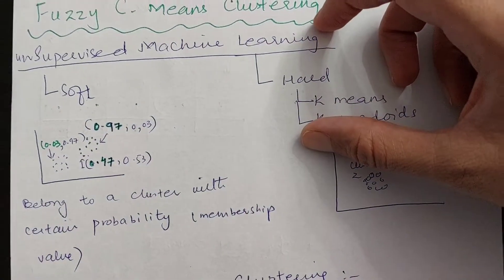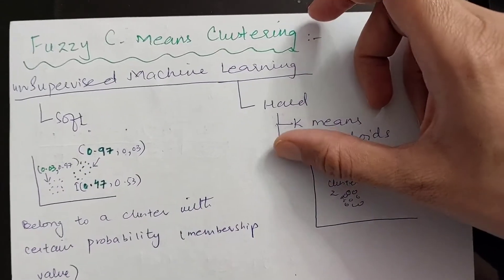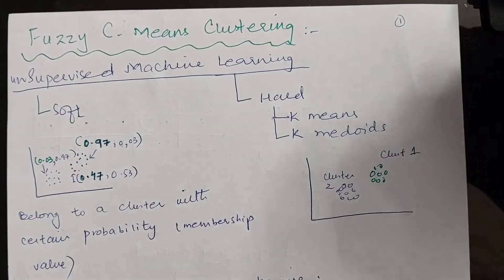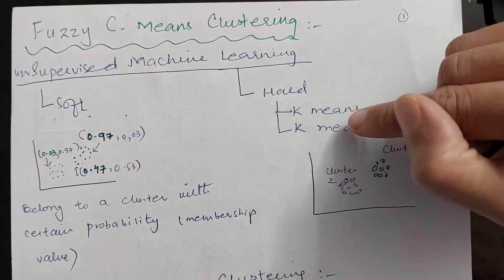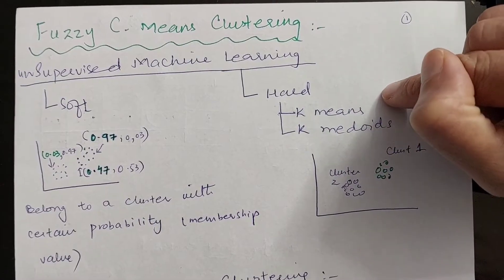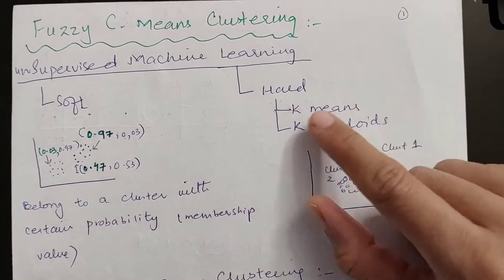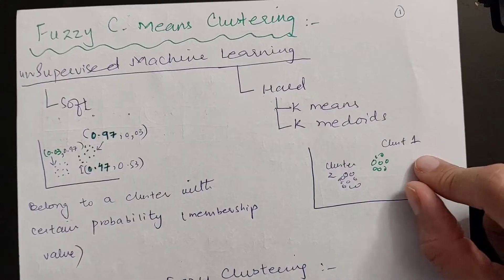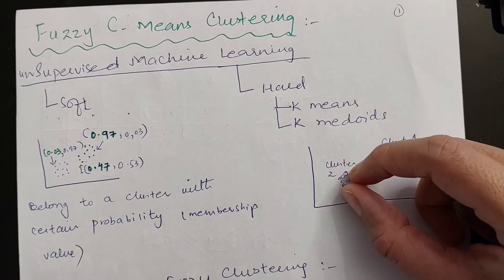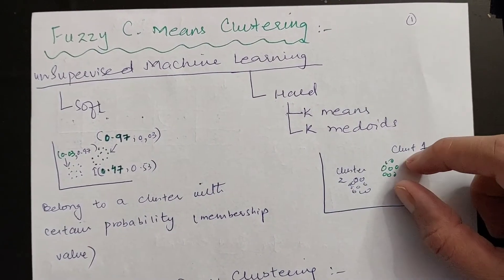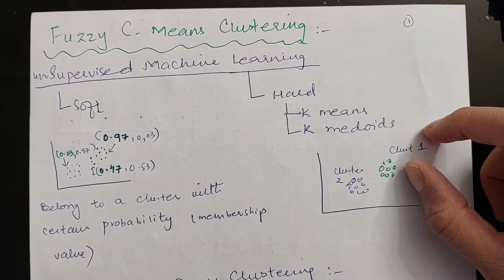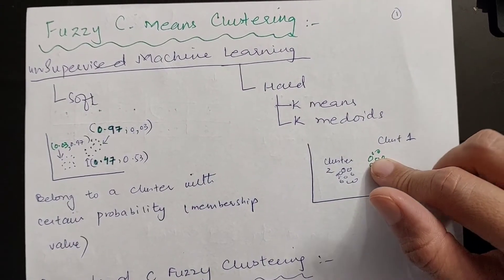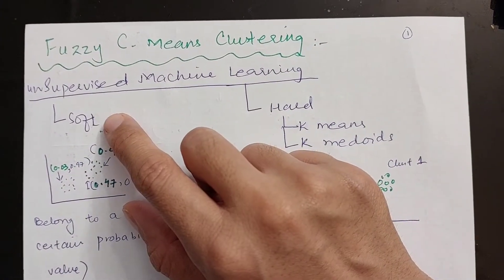There are two types of unsupervised machine learning clustering algorithms. One is hard clustering. In hard clustering, we do k-means or k-medoids, which makes hard clusters where this data is part of cluster 2 and this data is part of cluster 1. These clusters are not mixing with one another.